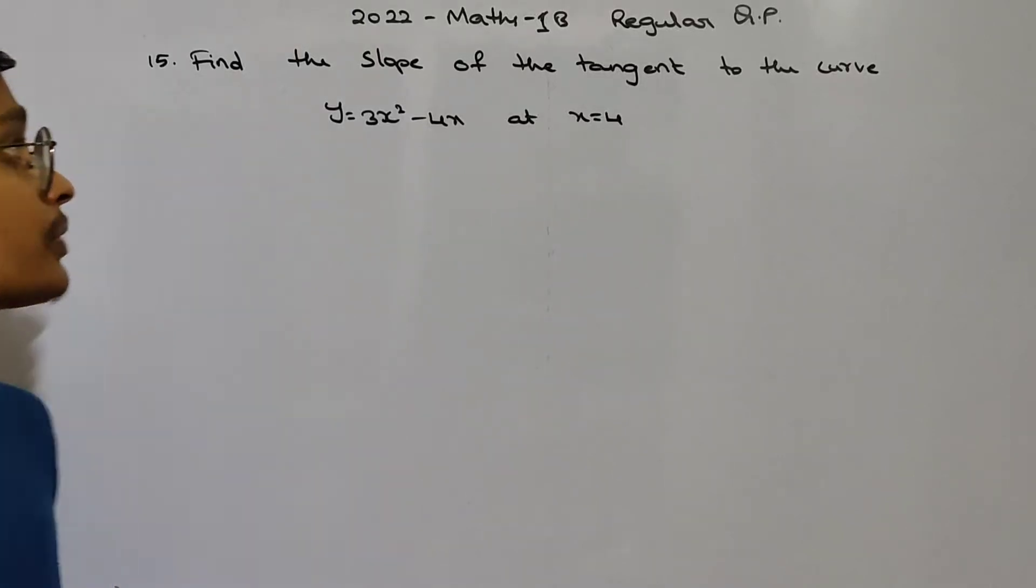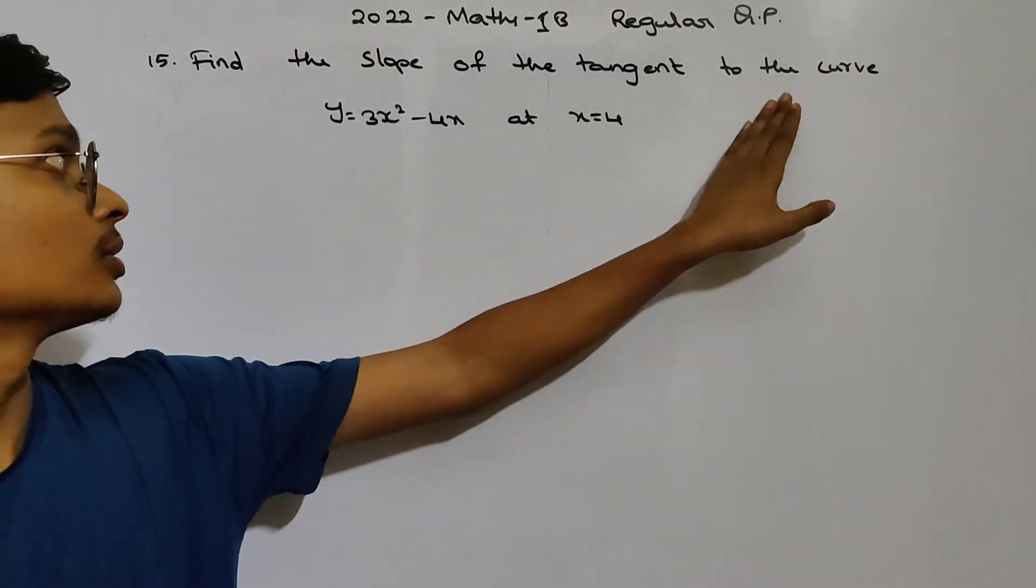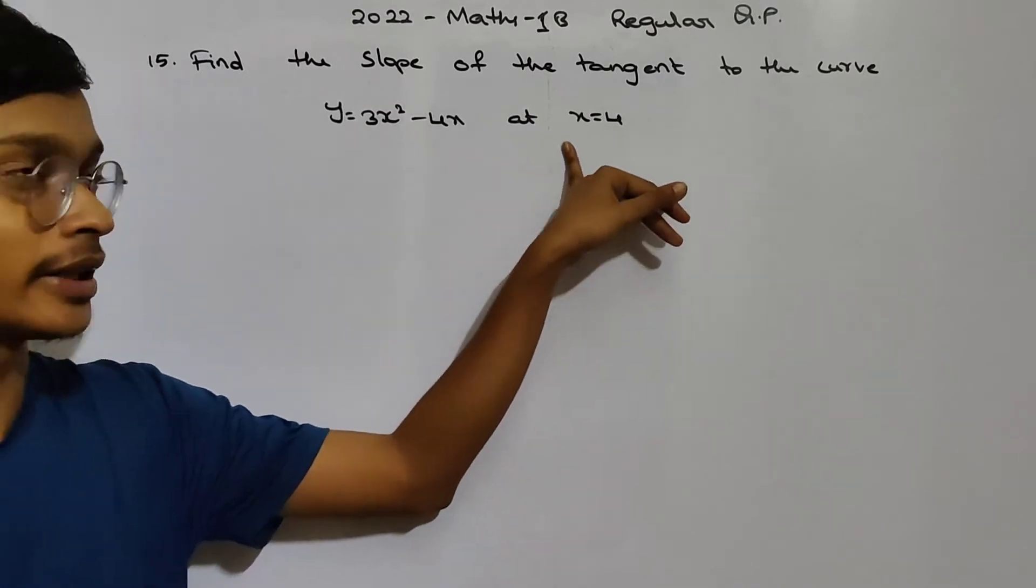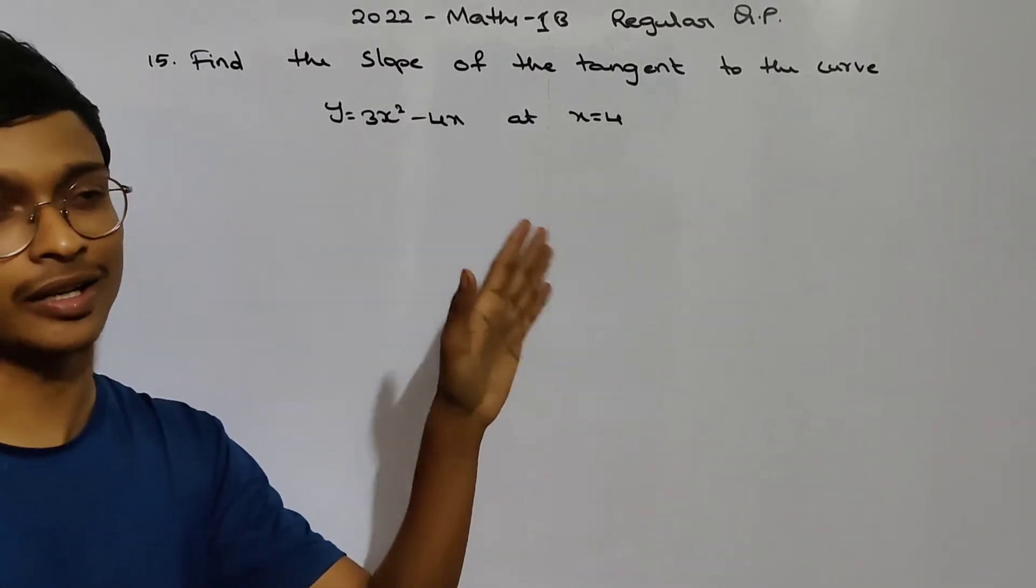I am going to find the slope of the tangent to the curve. We will find the slope of the tangent to the curve. We will find the differentiation continuation.